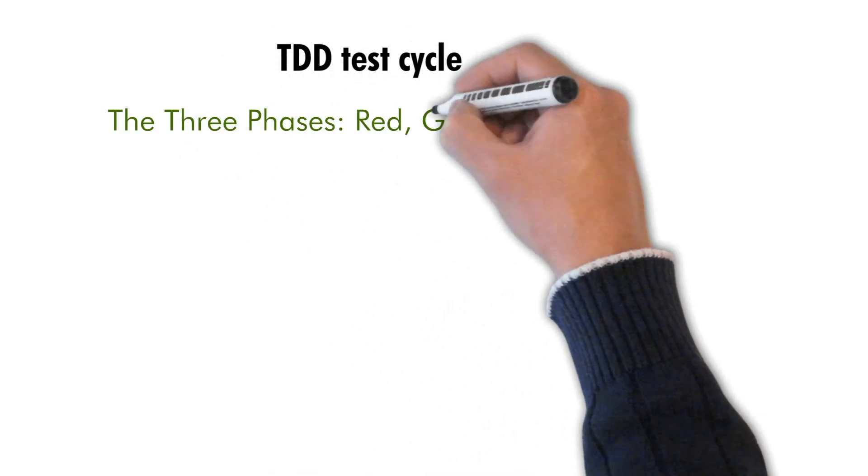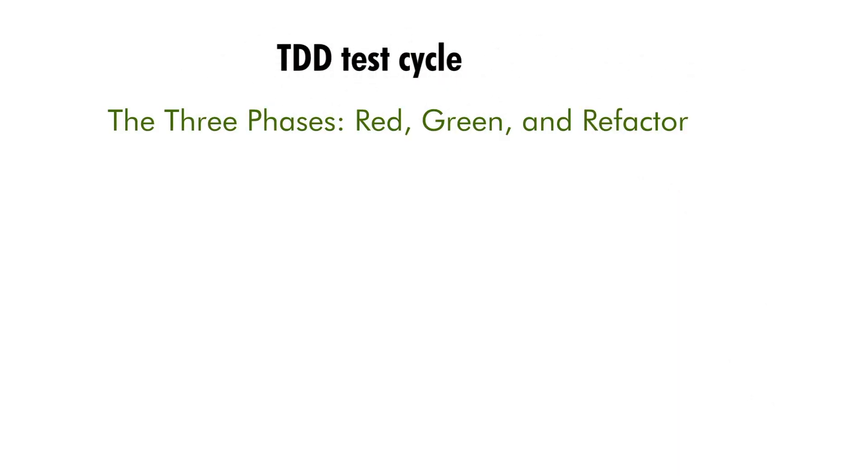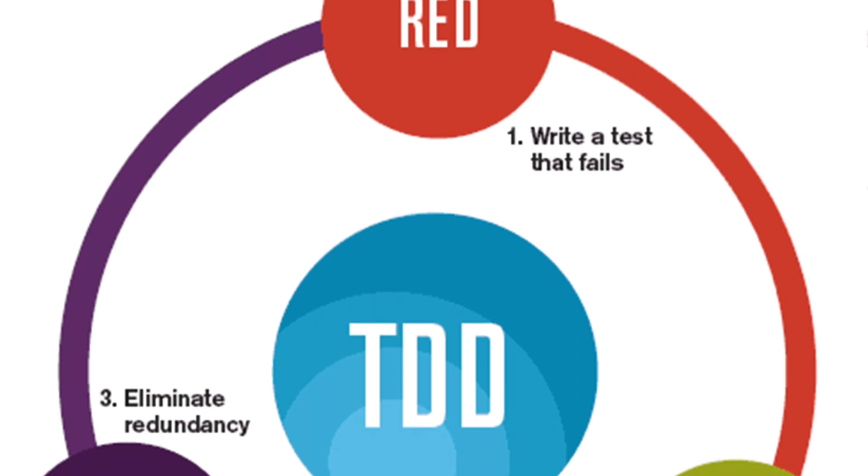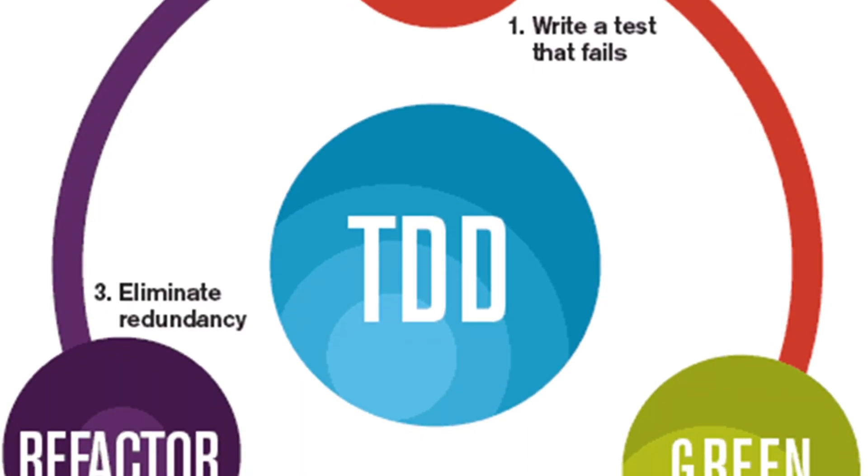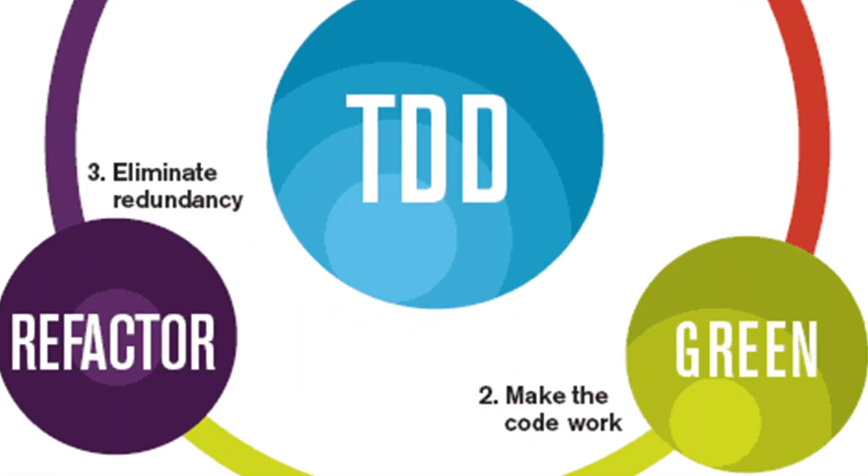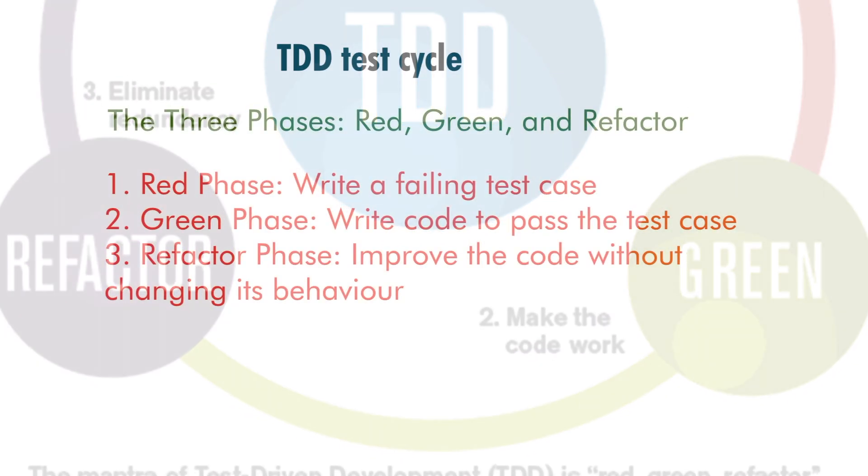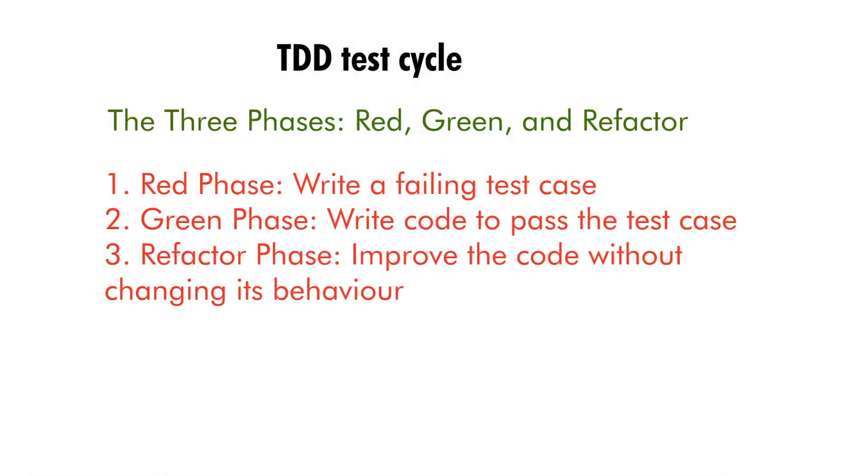The TDD test cycle consists of three phases: red, green, and refactor. In the red phase, you write a failing test case that defines the behavior you want to implement. In the green phase, you write the code to pass the test case. In the refactor phase, you improve the code without changing its behavior. This cycle is repeated continuously throughout the development process.